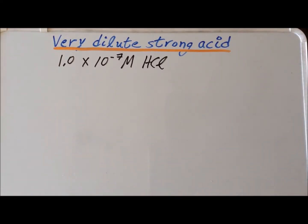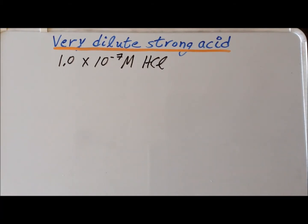Hello. In this video, we are going to calculate the pH of a very dilute strong acid, specifically hydrochloric acid with a concentration of 1.0 times 10 to the minus 7 molar.